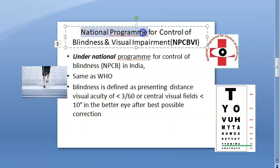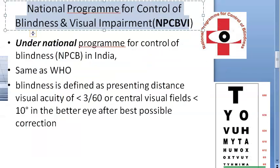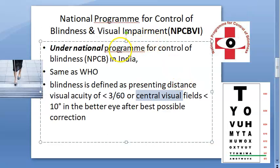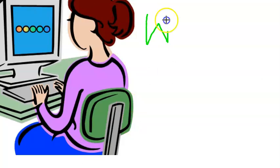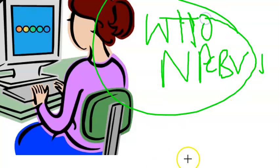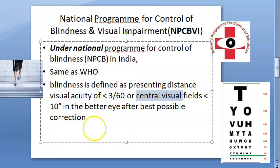In India, the National Programme for Control of Blindness and Visual Impairment (NPCBVI) also has the same definition — less than 3 by 60, visual field less than 10 degrees, etc. So the NPCBVI definition is the same as the WHO definition. So far we have looked at the WHO definition and the NPCBVI definition of blindness, which are the same.